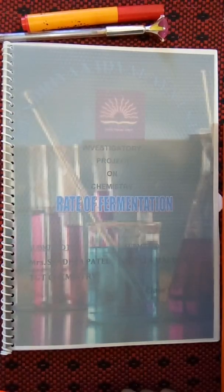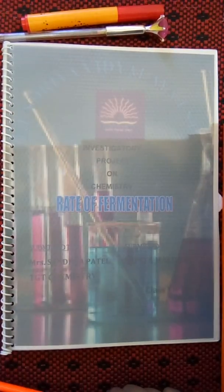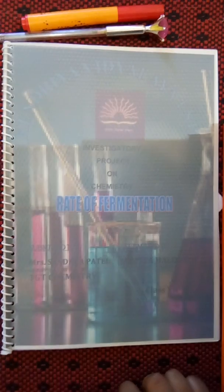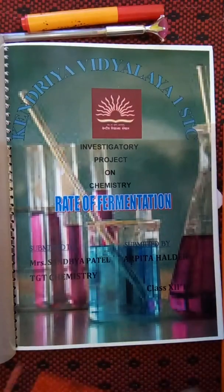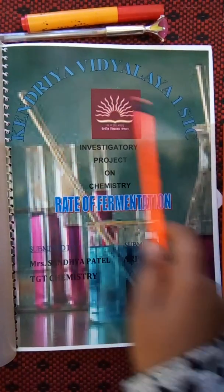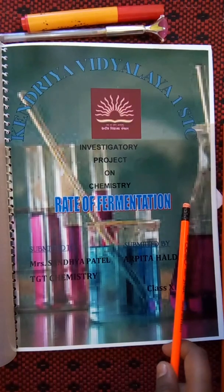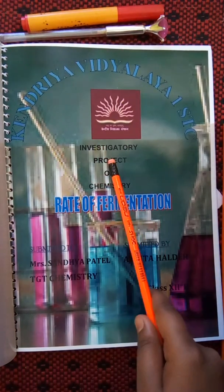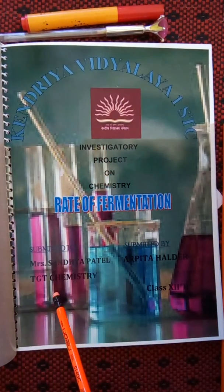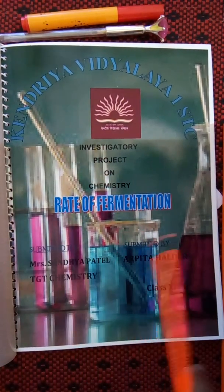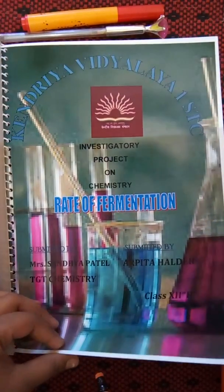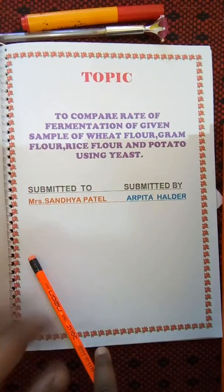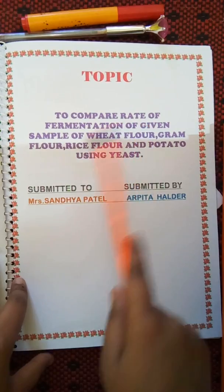Hello friends, I made this video to help you make an investigatory project on chemistry. I chose the topic 'Rate of Fermentation.' On the front page I wrote my school's name, logo, and submitted to my chemistry teacher. Submitted by — this is my name — in a glossy paper. The second page is the topic page.